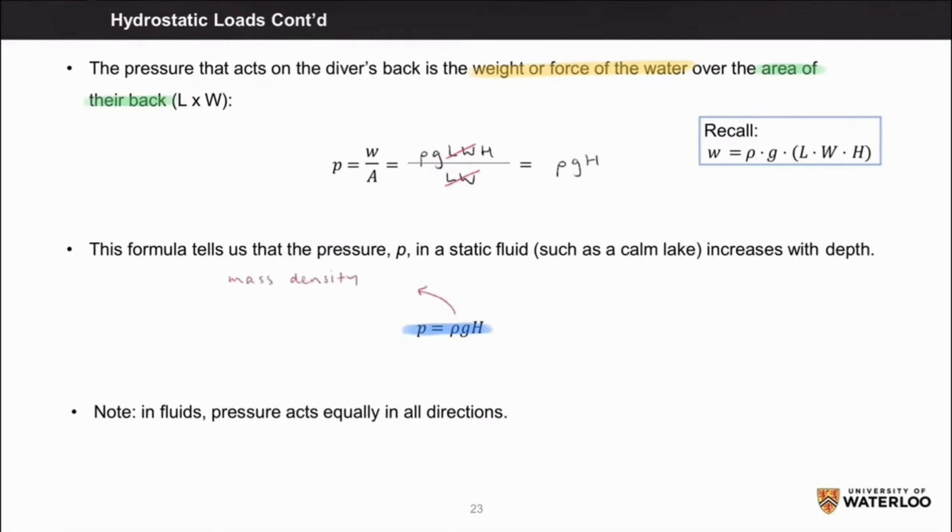Rho is the mass density of the fluid in mass per unit volume, g is the acceleration due to gravity, and h is the depth below the surface of the fluid.